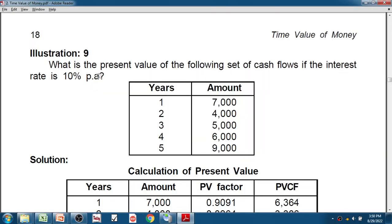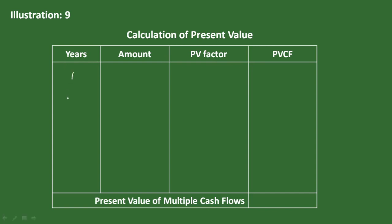One problem: what is the present value of the following set of cash flows if the interest rate is 10 percent per annum? So, over five years: first year 7,000 rupees, second year 4,000, third year 5,000, fourth year 6,000, and fifth year 9,000 rupees. Cash flow is given — let's find the solution.